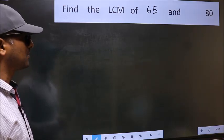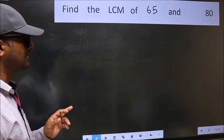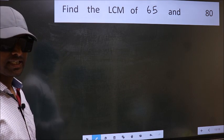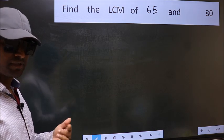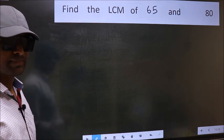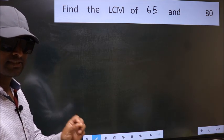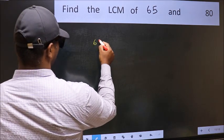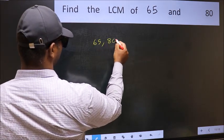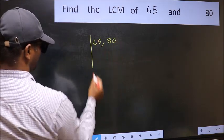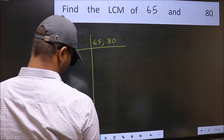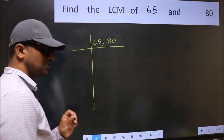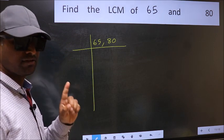Find the LCM of 65 and 80. To find the LCM, we should frame it in this way: write 65 and 80. This is your step 1.